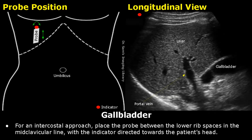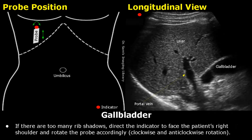If you see too many rib shadows, you can rotate the probe anticlockwise to direct the indicator towards the patient's right shoulder. You can also rotate further to fit the probe between the rib spaces, which can clear the shadowing and allow you to scan the gallbladder.